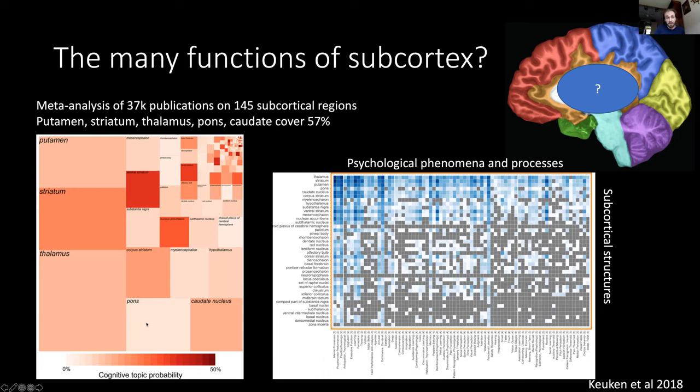A second thing to note is that they also checked for the proportions of these studies that contained cognitive keywords. What you can see in color here are the probabilities of cognitive keywords being associated with these regions. In general, these probabilities are not very high.